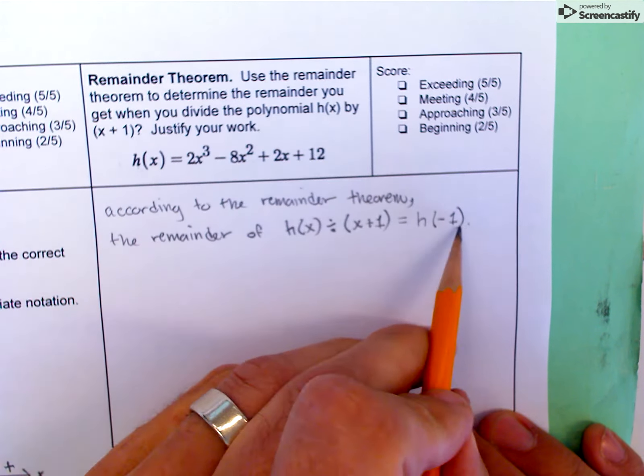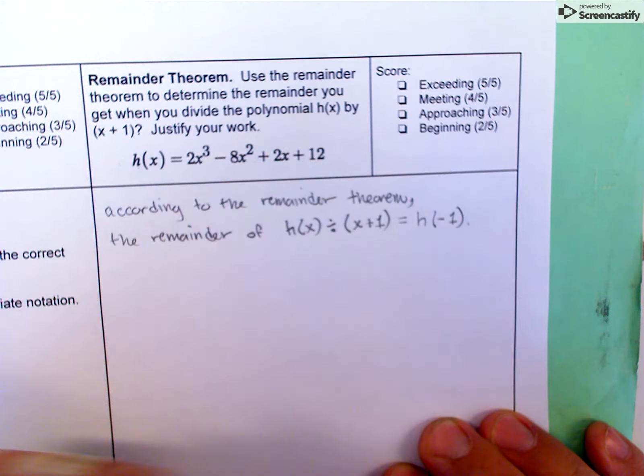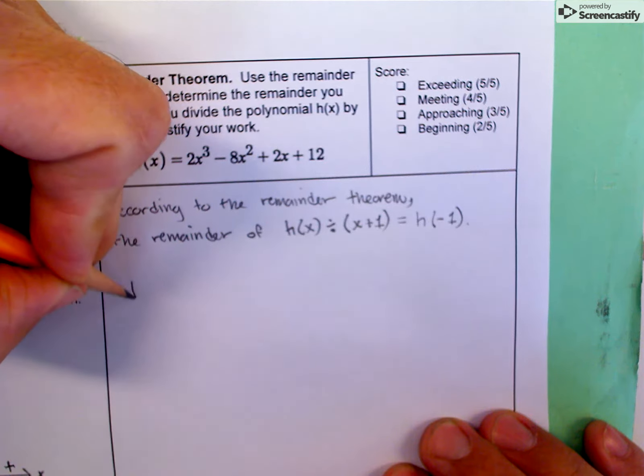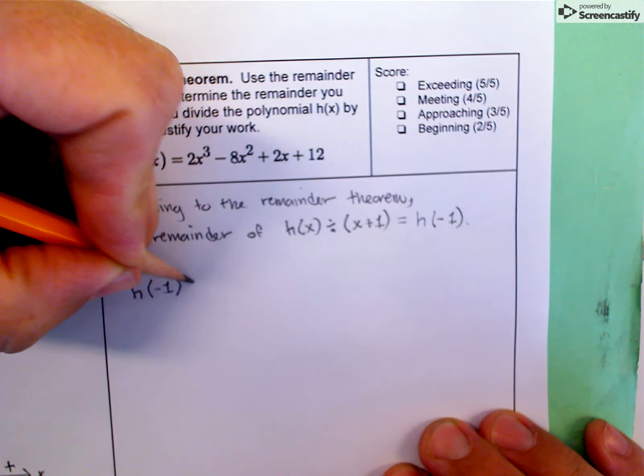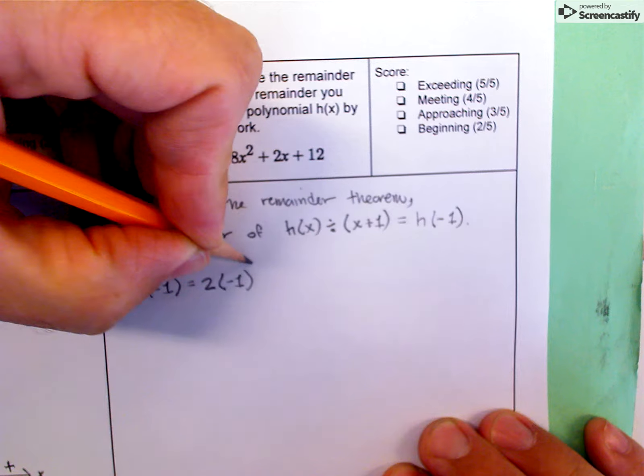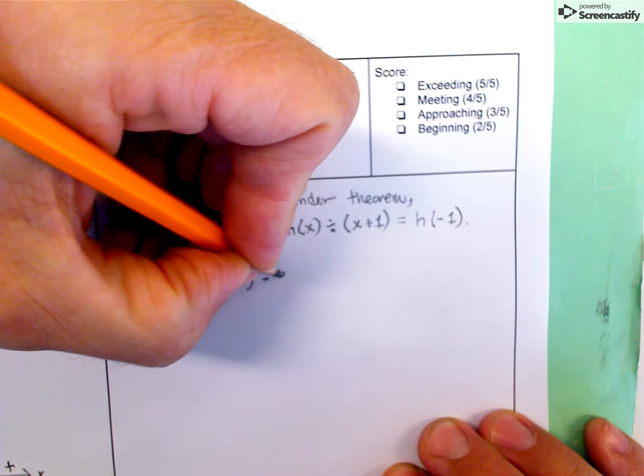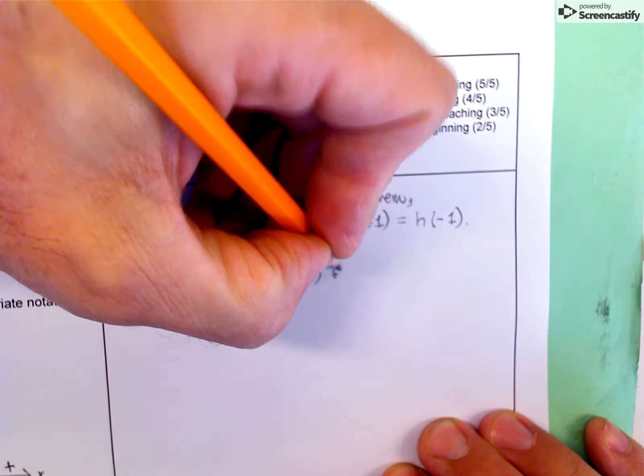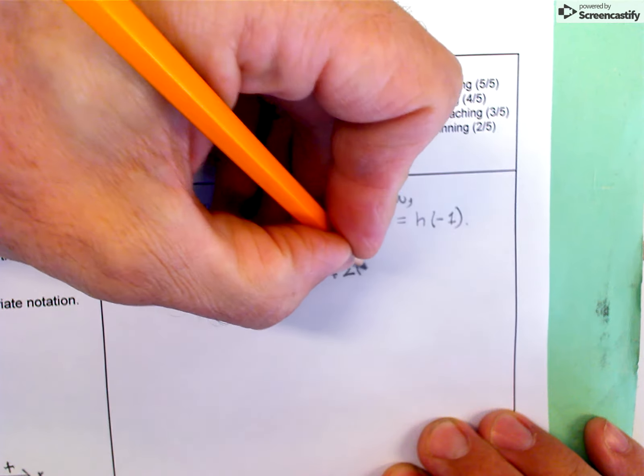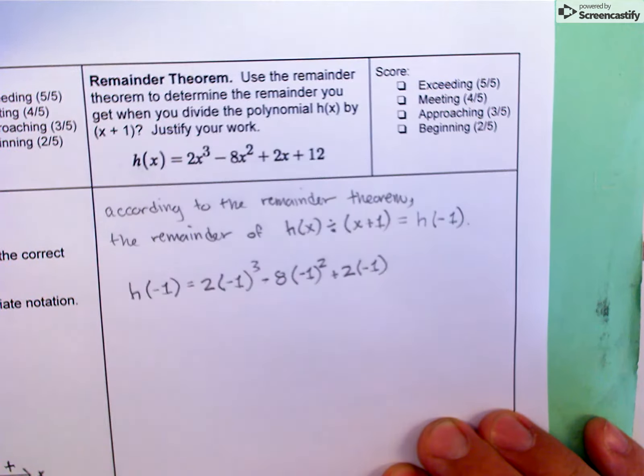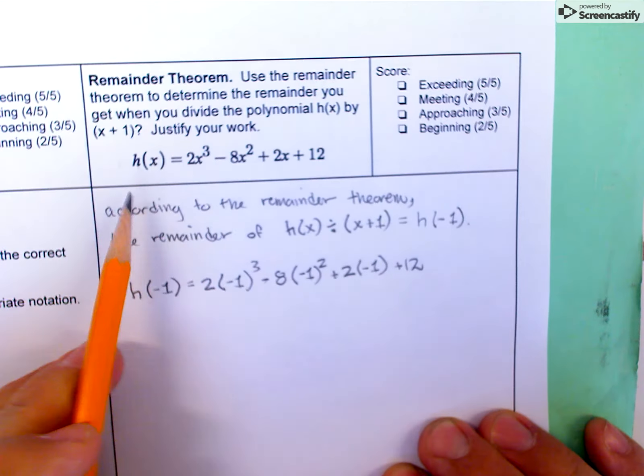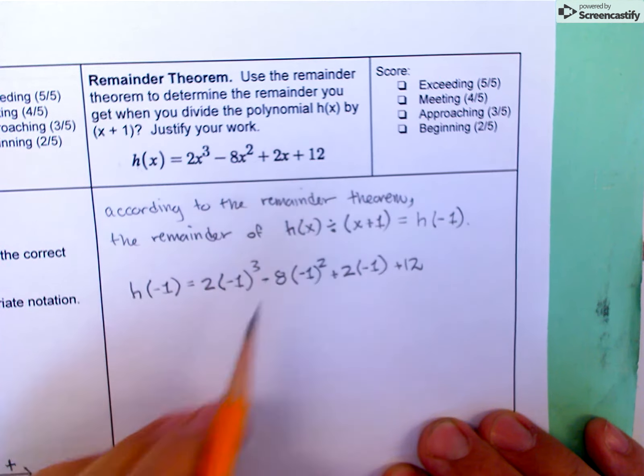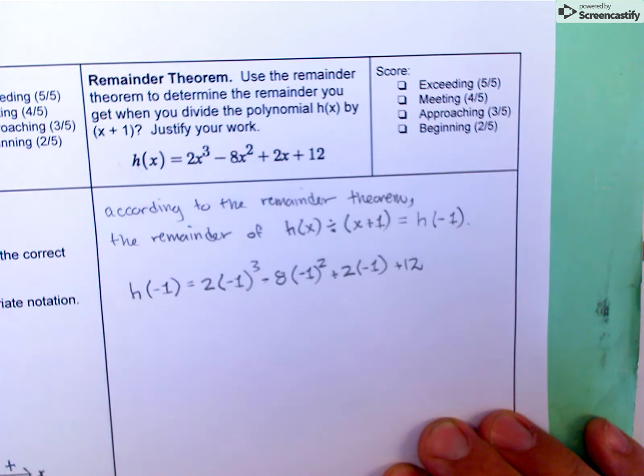Now all I have to do is evaluate h of negative 1 using substitution. So h(-1) equals 2 times (-1) cubed minus 8 times (-1) squared plus 2 times (-1) plus 12. I've just copied my original polynomial and done the substitution here.